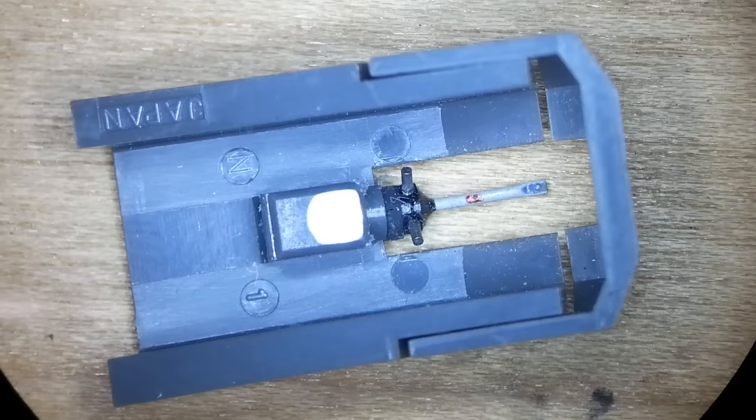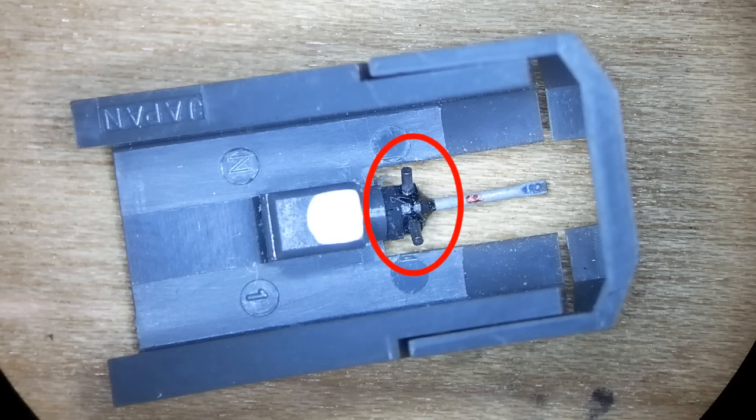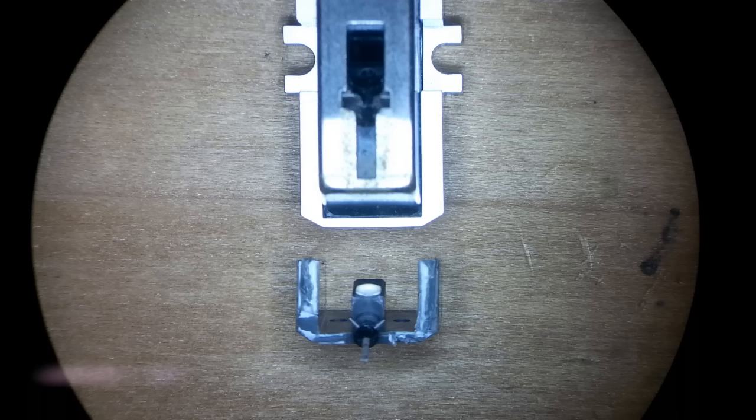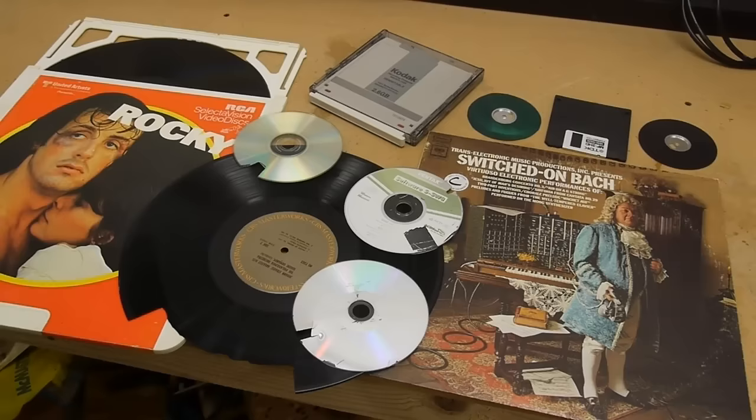The way this works is that the stylus vibrates because of the grooves in the LP and it moves the magnets near a coil and that's what generates the electricity that gets amplified into the audio signal. Unfortunately if we put this directly in the electron microscope those magnets would deflect the electron path and distort the image. So I pulled the magnets off of the stylus.